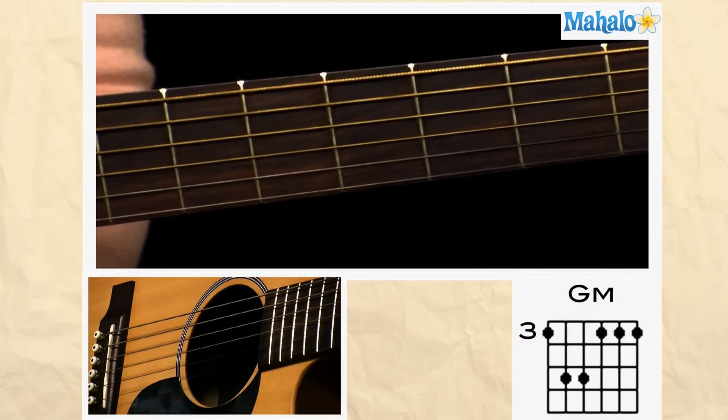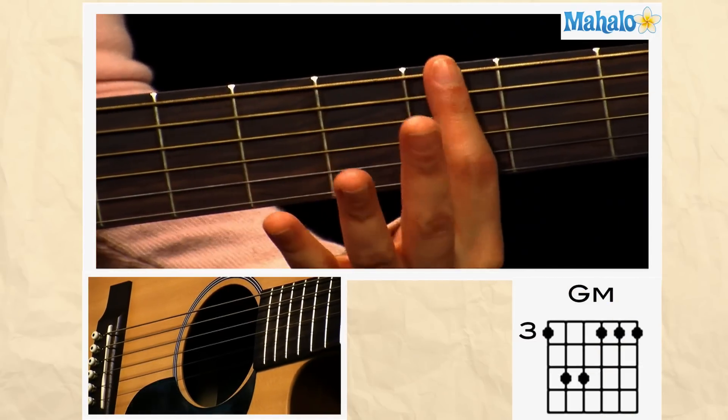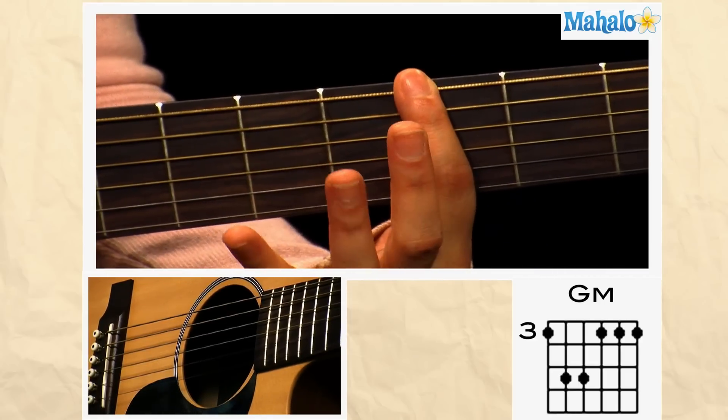Welcome to Mahalo Guitar Lessons. To play a G minor chord, first bar your first finger all the way across on the third fret.